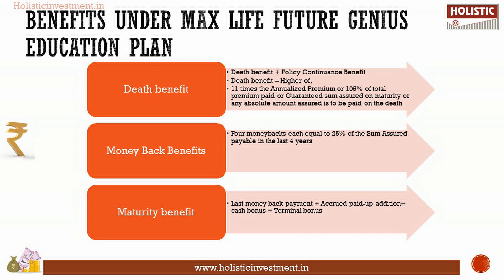Money back benefit: money backs equal to 25 percent of sum assured are payable in the last four policy years. Maturity benefit: any installment of the money back payment due on the maturity date, plus accrued paid-up addition or cash bonus, and terminal bonus if any.